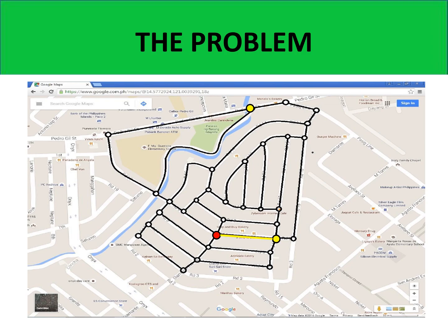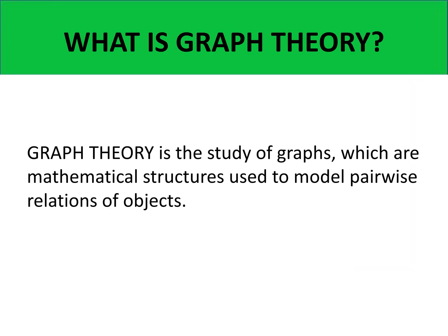So Google would suggest that from the red point, we go east. And then we go east again. And then north. North again. Northeast. Northwest. And finally, southwest. So Google is actually applying lessons from Graph Theory.